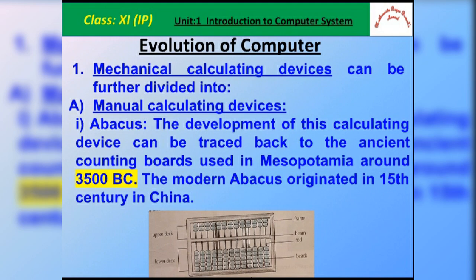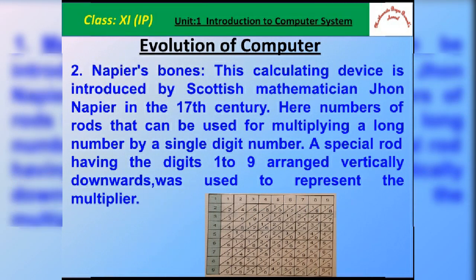Mechanical calculating devices are further subdivided into manual calculating devices and semi-automatic calculating devices. The first manual calculating device is the abacus. The abacus is a calculating device useful for addition and subtraction very easily. It was introduced in Mesopotamia around 1300 BC, and the modern abacus probably originated in the 15th century in China.